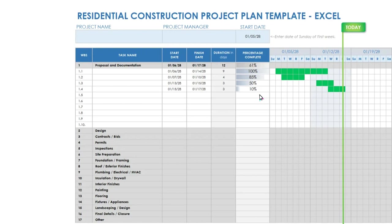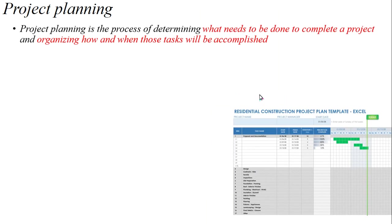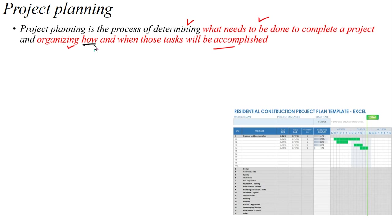Right from planning to executed percentage — project plan. This is the process of determining what needs to be done to complete a project, and how and when those tasks will be accomplished. That will be highlighted here — how and when.